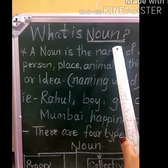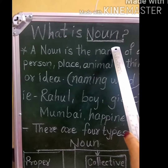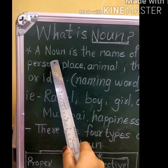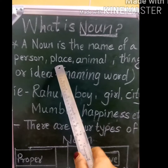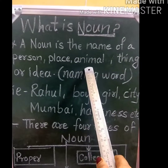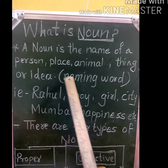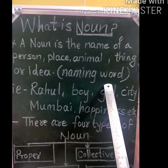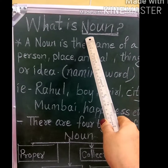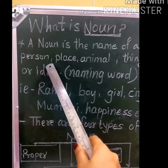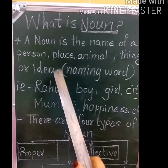What is noun, my dear friend? Let me clear you. Noun is the name of a person, place, animal, thing or idea. We can also call it a naming word. Noun is the name — name of a person, place, animal, thing or idea.